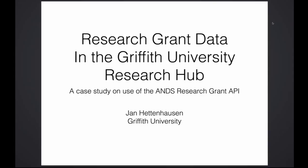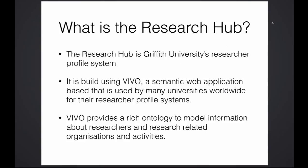I work at Griffith University in eResearch Services. A while ago we used the ANS Research Grant API to improve the data we present in the Griffith University Research Hub. The Research Hub is our publicly facing researcher profile system, built for two main purposes: to make Griffith's research more discoverable, and to give researchers a profile they can use for their own purposes. The Research Hub is built using VIVO, a semantic web application that's becoming quite popular — there's a large number of universities worldwide that build their researcher profile systems based on it, and it came originally from Cornell University with a huge uptake particularly in the US.